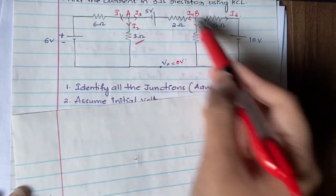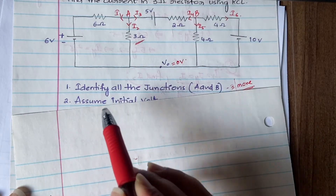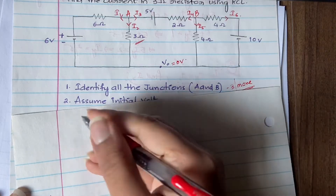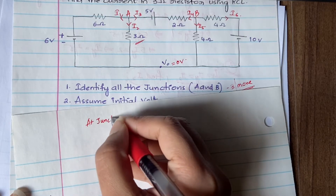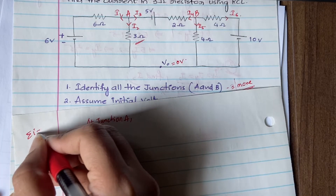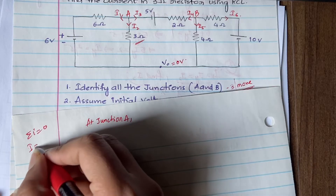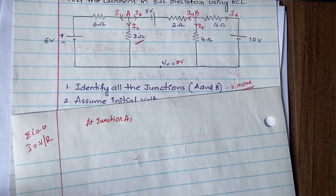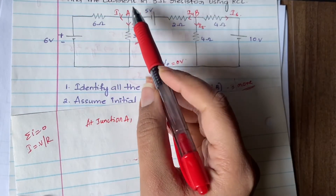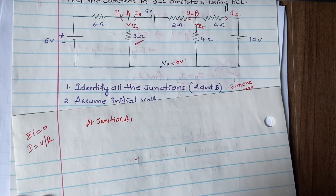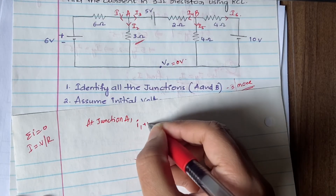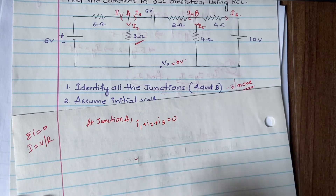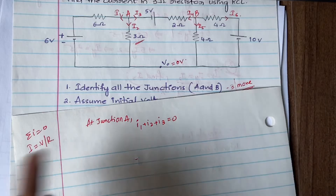At Junction A, the KCL equation states the sum of currents equals zero. From Ohm's law, V = IR, so I = V/R. Since every current is going outward, you can write directly: i1 + i2 + i3 = 0.